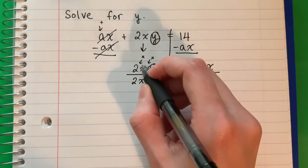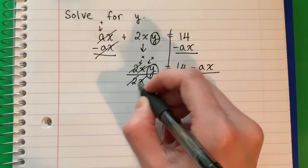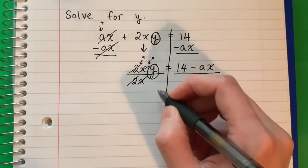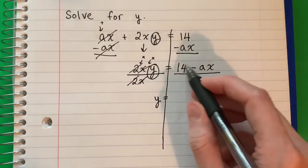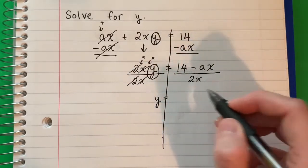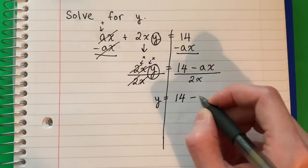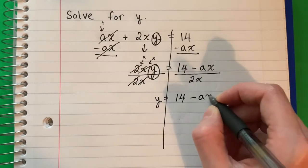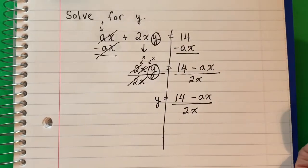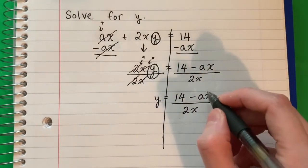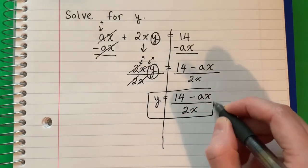So I'm going to go ahead and cancel out the 2, cancel out the x, and copy down y equals. And there you go. This is as far as we will go from here.